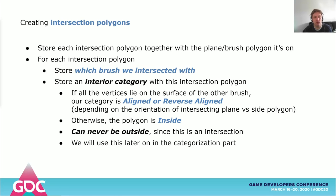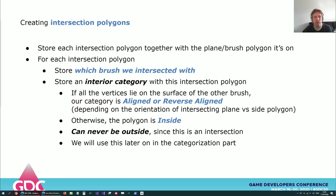With each polygon we store which brush intersection created it. You also need to store a category with each polygon you just created, which will be used later on. This category describes what the interior part of a polygon is relative to the intersecting brush — we call this the interior category. If all our vertices lie on top of a surface from the other brush, then the category must be aligned or reverse aligned with it. Otherwise the category is always inside, since this polygon represents an intersection with another brush, so we already know there has to be an intersection.